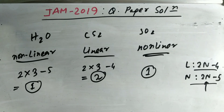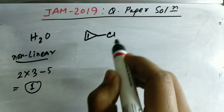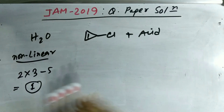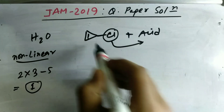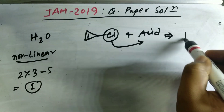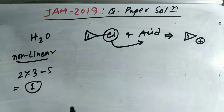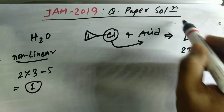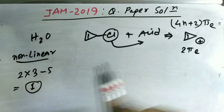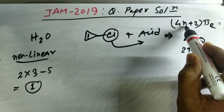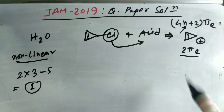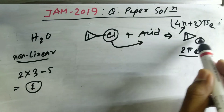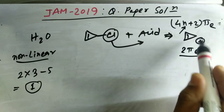Now let's come to another question on basic aromaticity. There is a cyclic system with a Cl group, and the acid removes the Cl, giving a cationic system. This system is aromatic overall because it has 2 pi electrons, satisfying the 4n + 2 rule (with n = 0, giving 2 pi electrons). It is planar with continuous conjugation, so all conditions for aromaticity are fulfilled.